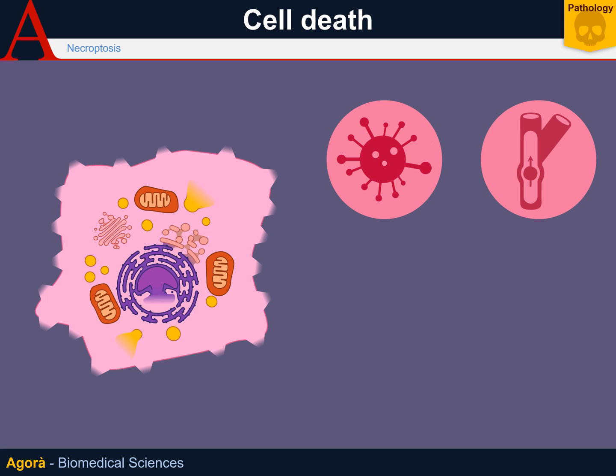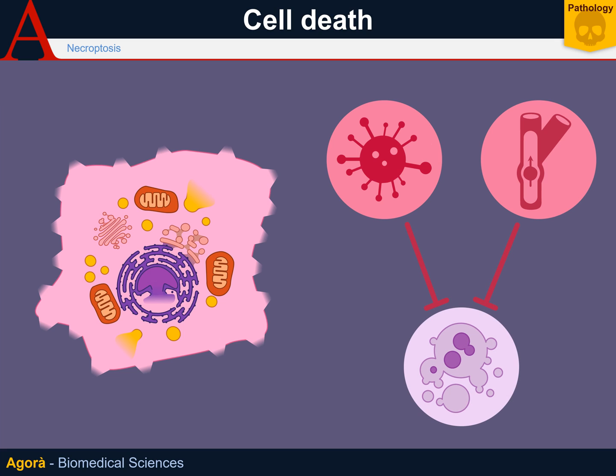In both cases, it is impossible for the cell to enter apoptosis. In the first case, this is due to some viruses — for example cytomegalovirus — producing anti-apoptotic proteins such as the viral version of FLIP, which inhibits caspase-8. In the second case, ischemia-reperfusion damage can apparently damage the molecular mechanism of caspases and prevent cells from apoptotic death.